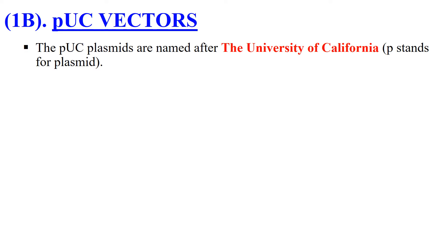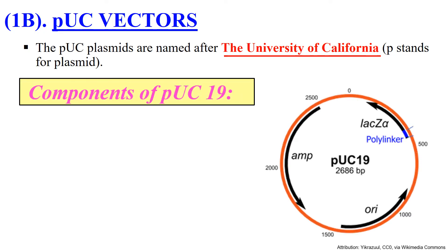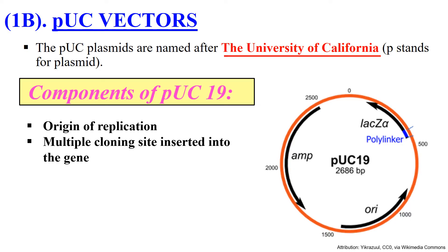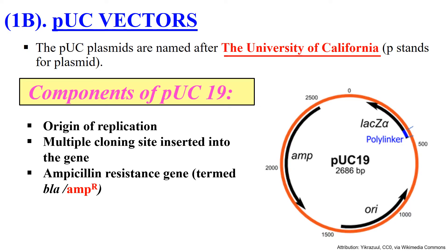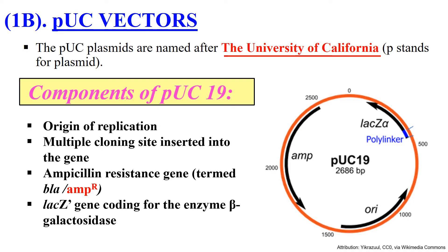The next series is the pUC vector. pUC means this vector was developed in the University of California — named after the University of California — and 'P' stands for plasmid. So pUC means plasmid University of California. The components of pUC19 include: origin of replication required for replication inside the host cell, multiple cloning sites where we can insert our gene, and two marker genes. First is the ampicillin gene giving resistance against ampicillin, and another is the lacZ gene which codes for beta-galactosidase. This lacZ gene helps in the identification of the host cell which contains the pUC19 plasmid vector. The size of pUC19 is 2.6 kb.